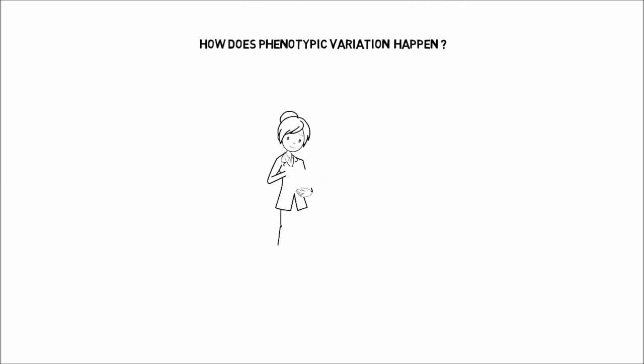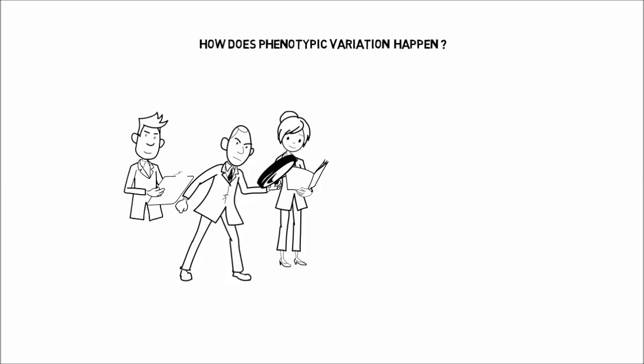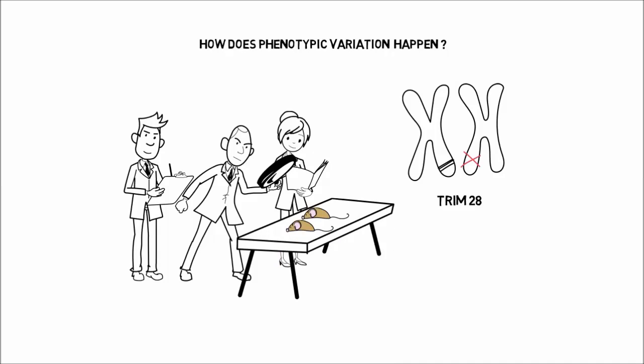A while ago now, we started studying a strain of mice missing one copy of a gene called TRIM28. What made these mice so interesting was that even though they were basically genetically identical, their body weights were all over the map.